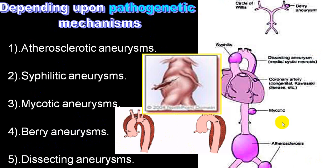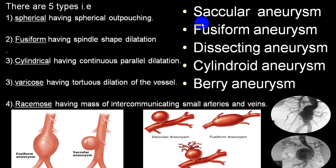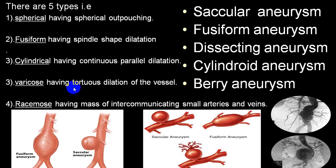So you can have a mycotic aneurysm, dissection, berry aneurysm, saccular, or cylindrical — depending upon the shapes — and the most common etiologies are atherosclerosis, syphilis, and mycotic aneurysm. There is also a varicose variety, which is a tortuous dilatation of a vessel, and a racimose type, where there is a mass of intercommunicating small arteries and veins.